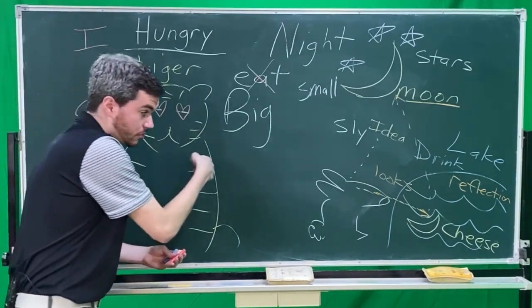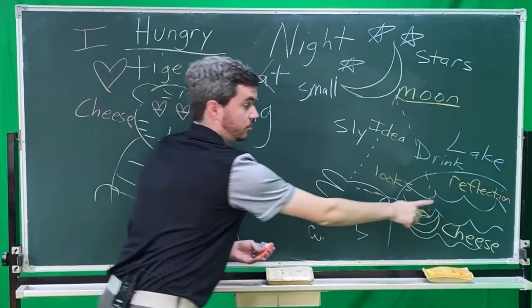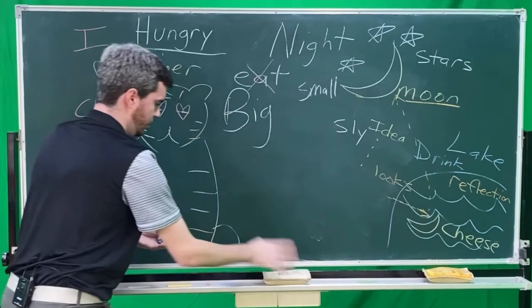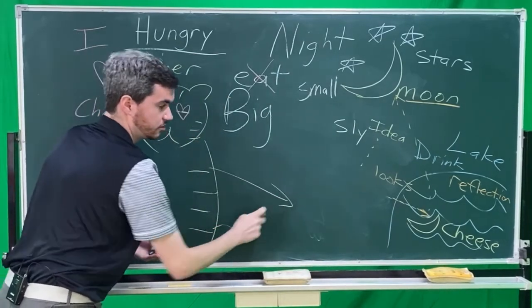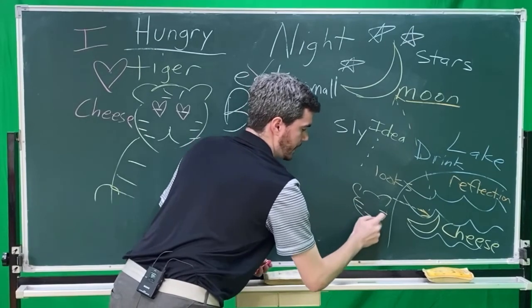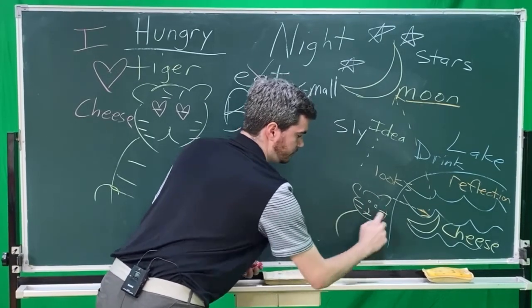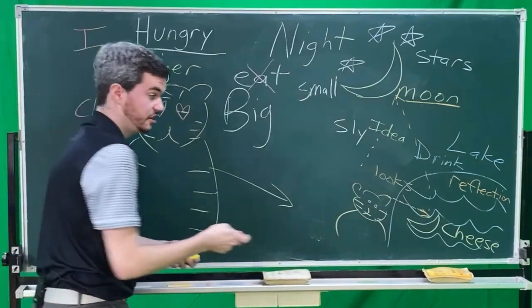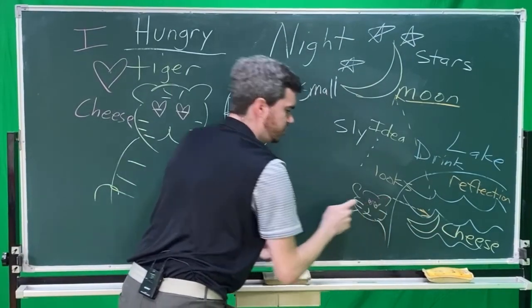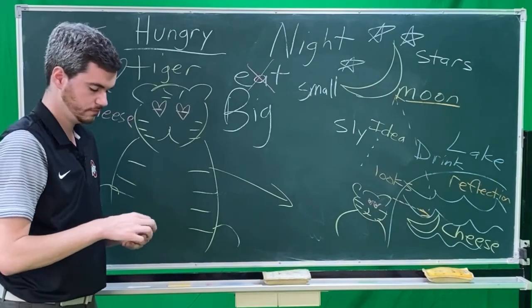So the tiger walks up to the lake. The rabbit moves out of the way. The tiger goes to the lake. Here is my tiger. And the tiger sees the cheese. Oh, yes. Love cheese. OMG. Yes.